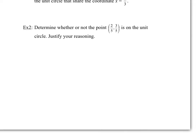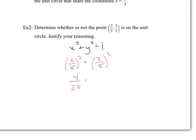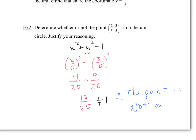Number two: determine whether or not the point two-fifths and three-fifths is on the unit circle. To be on the unit circle, the point must satisfy x squared plus y squared equals 1. So we plug in: two-fifths squared plus three-fifths squared equals four-twenty-fifths plus nine-twenty-fifths, which gives thirteen-twenty-fifths. This is obviously not equal to 1, therefore the point is not on the unit circle.